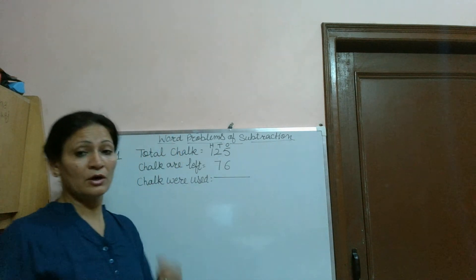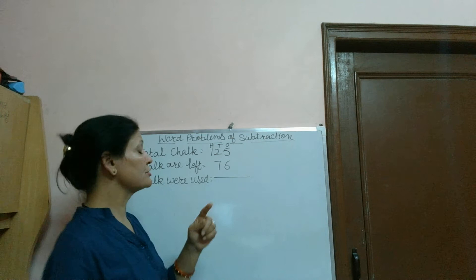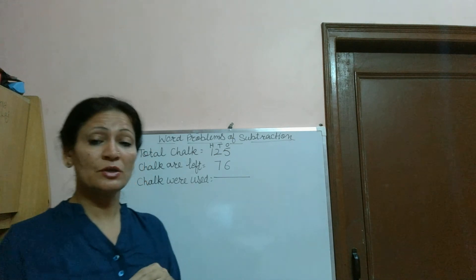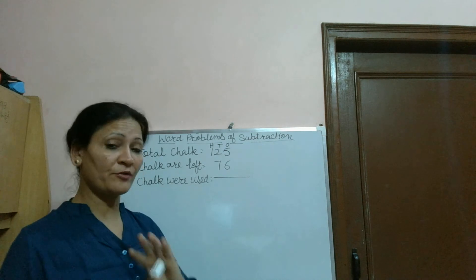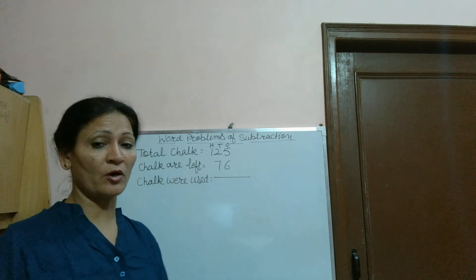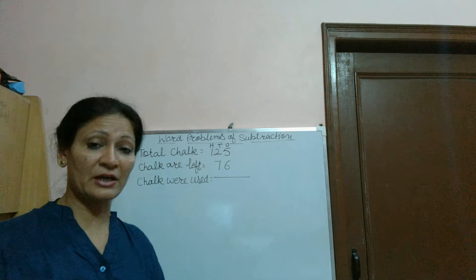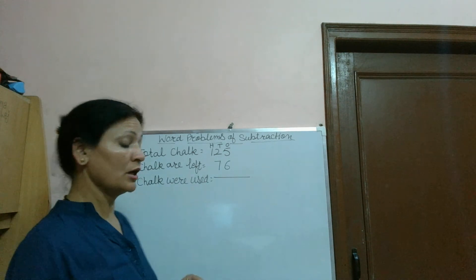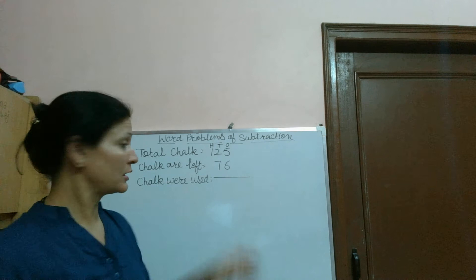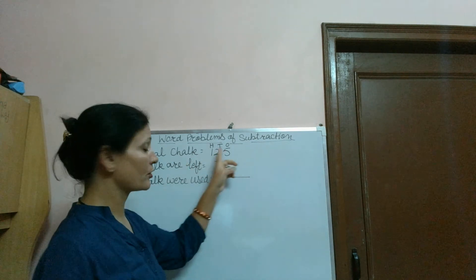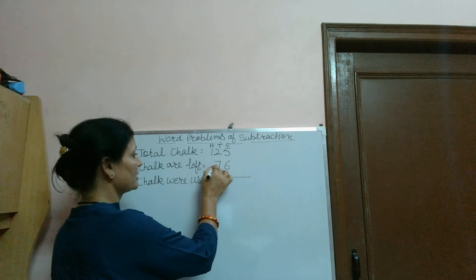How do we know how many chalk were used from the chalk box? There are 125 total chalk in the chalk box and 76 are left. So we will find the answer when we subtract the left chalk from the total chalk. Now subtract it.